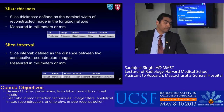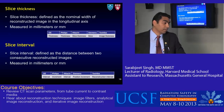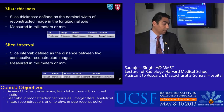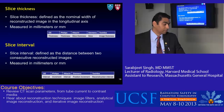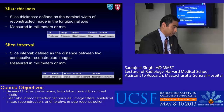Slice thickness is defined as the nominal width of the reconstructed image in the longitudinal axis, measured in millimeters. Almost all vendors call it thickness, slice thickness, or image thickness. Slice interval is defined as the distance between two consecutive reconstructed images, also measured in millimeters, with similar terminology such as interval or increment.